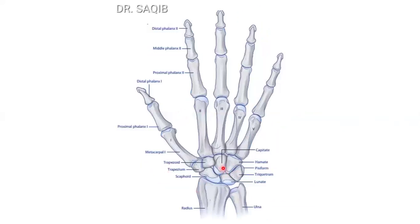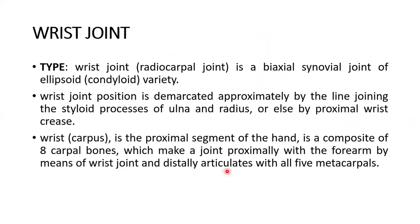The type of the wrist joint is a biaxial synovial joint of ellipsoid or condyloid variety. The wrist joint position is demarcated approximately by the line joining the styloid process of the ulna and radius, or else by the proximal wrist crease.